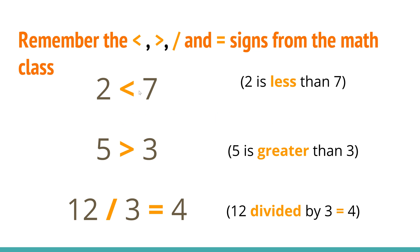Before we do that, let's remember from the math class the lesser, the greater, the divided, and the equal signs. For example, 2 is less than 7, 5 is greater than 3, and 12 divided by 3 equals 4. Now, I want to ask you not to bother with the numbers — we don't really care about the numbers, the comparisons, or the equation.